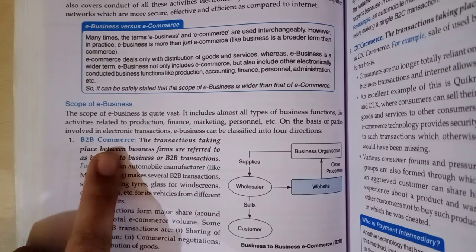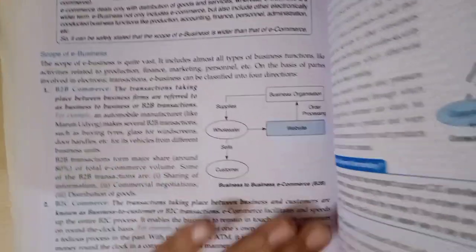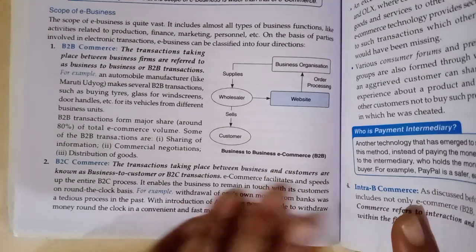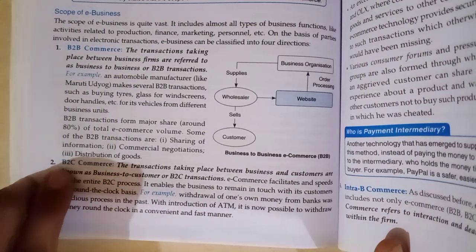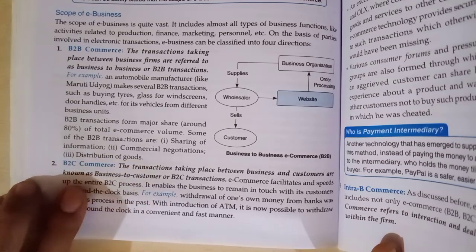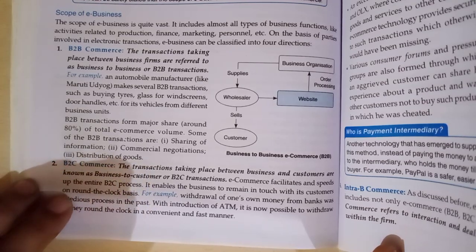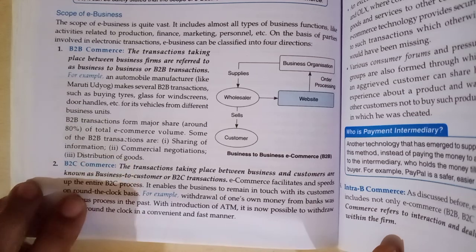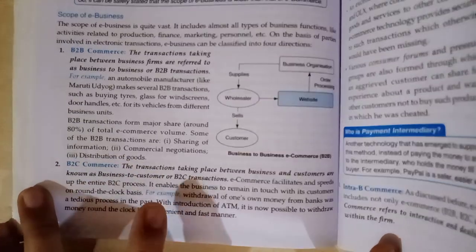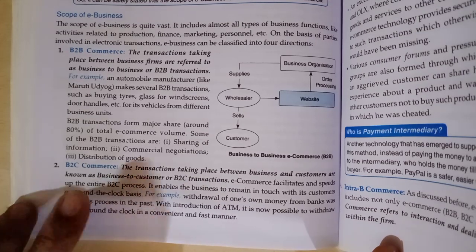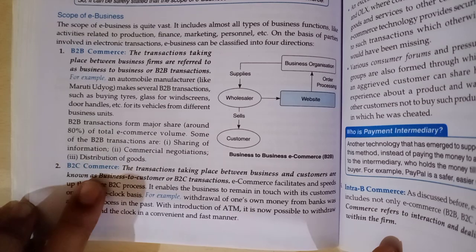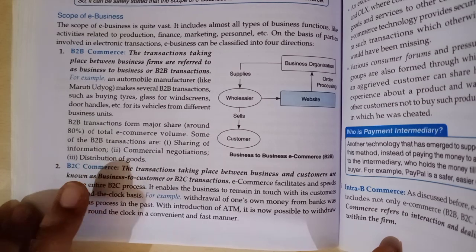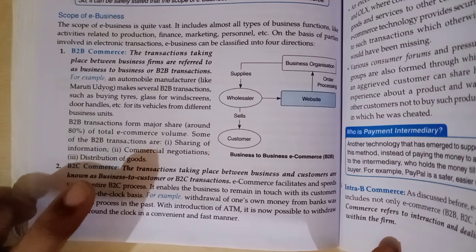B2C means where transactions take place electronically between a business organization and a customer. For example, there is a business organization with a website directly selling products to customers. If you reach that website and place an order, that is a transaction between business and customer — B2C.